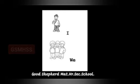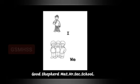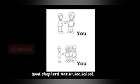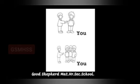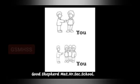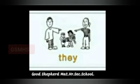'We' is used to talk about more than one person including ourselves. 'You' is used to mention one person or more than one person. For example: you are my friend; you people are so good.